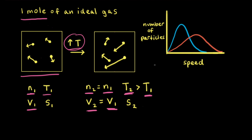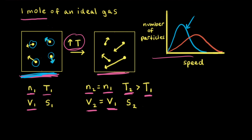Let's use a Maxwell-Boltzmann distribution on the right to explain what we see in our particulate diagrams on the left. In the particulate diagram, we can see that the particles are moving with different velocities — different magnitudes or speeds — as shown by the length of the arrows in the box. The Maxwell-Boltzmann distribution shows that for the curve in blue, there is a range of speeds available to the particles. The area under the curve represents all of the particles in the gas sample — some moving at a slower speed, some at a higher speed, but most moving at a speed close to the center of the peak.